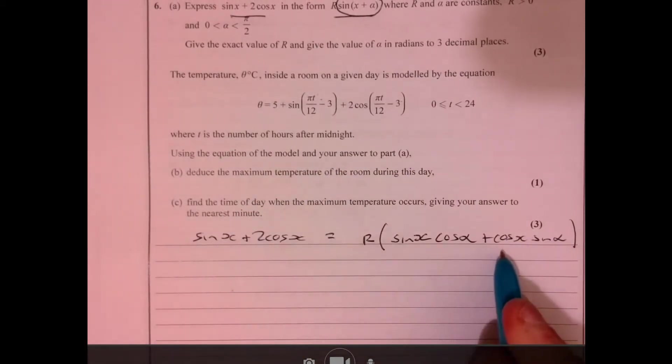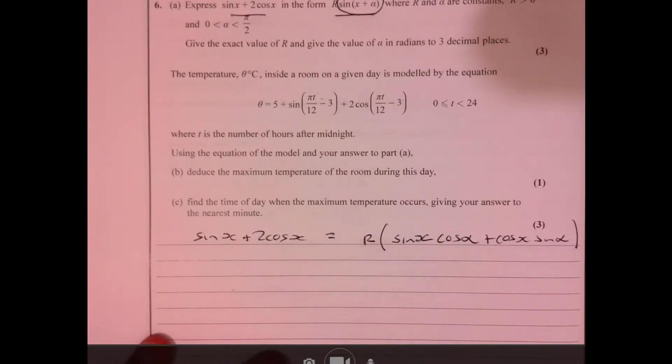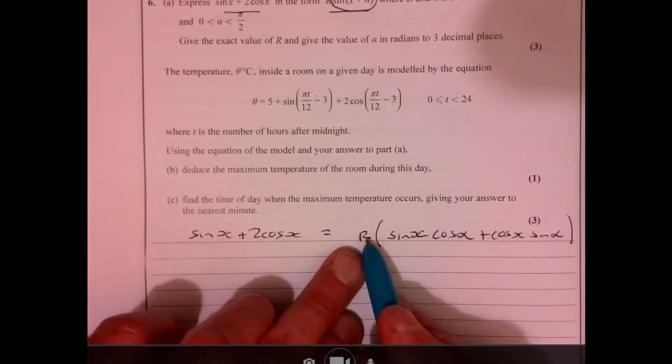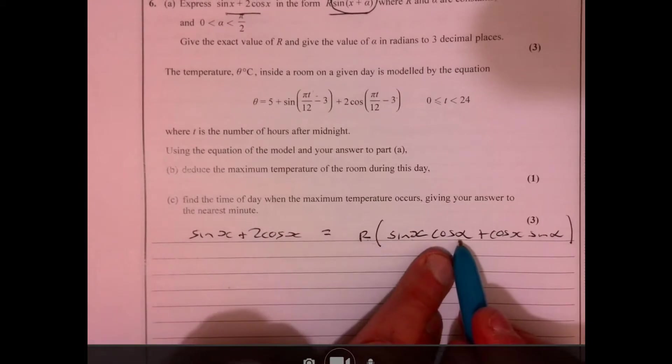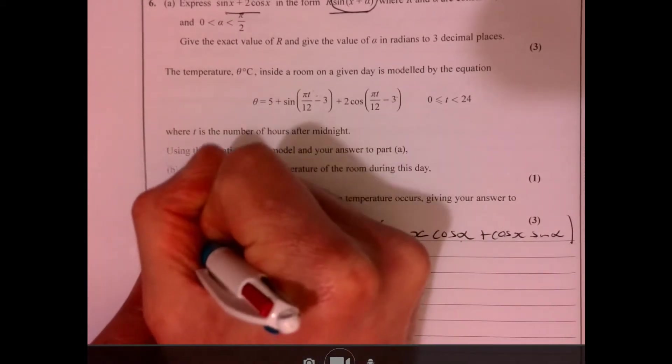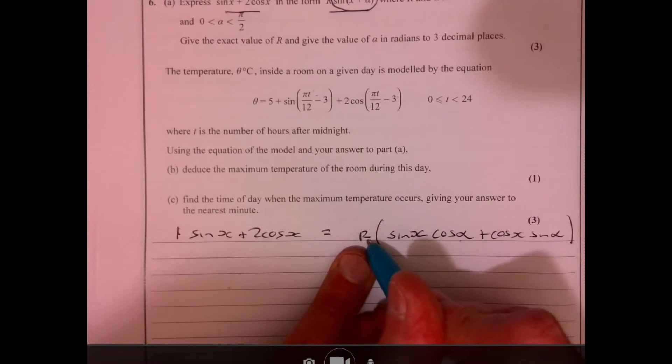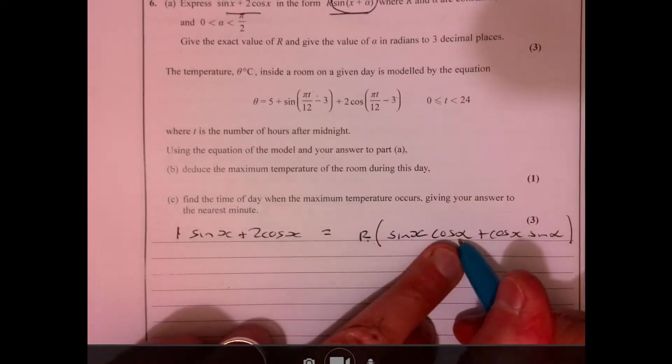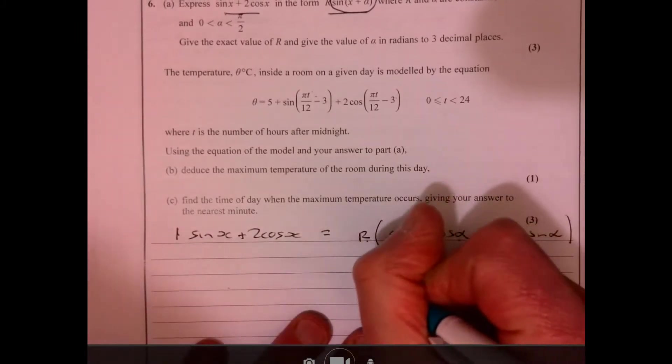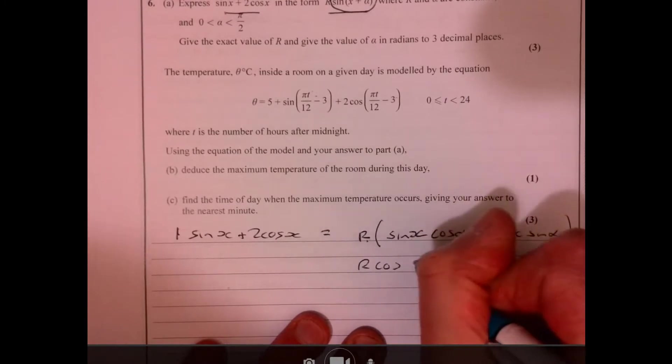We want to know when sine x plus two cos x, so we need to match these things together by equating the coefficients. If you imagine multiplying this out, r times sine x times cos alpha, that times that bit has got to equal one.